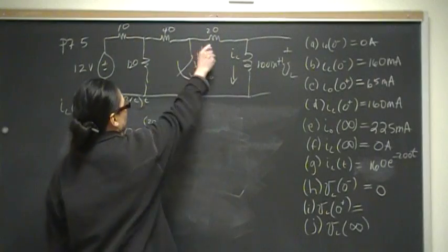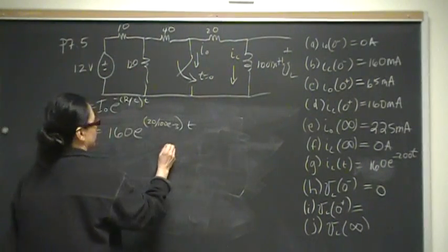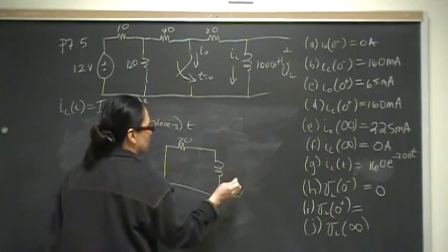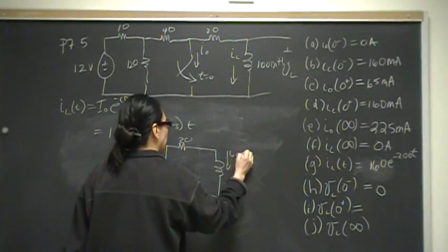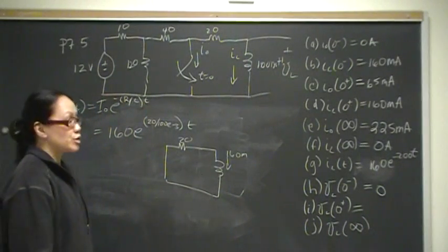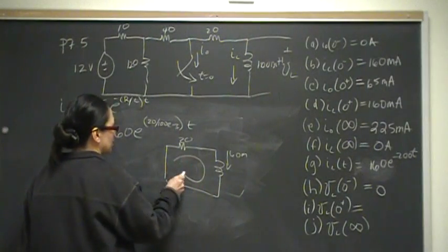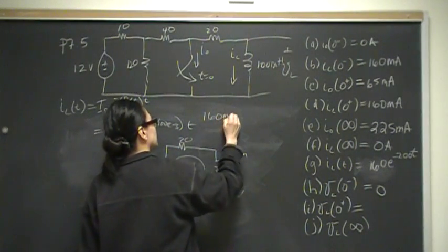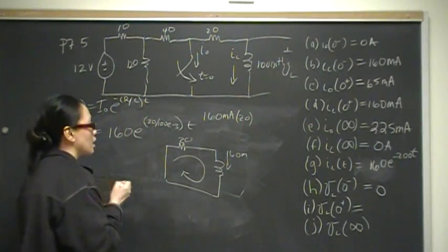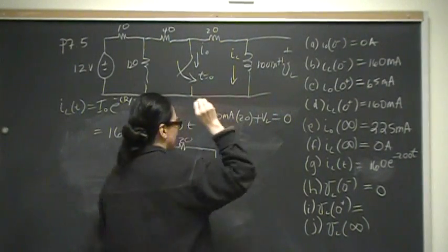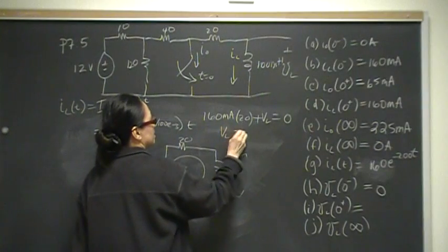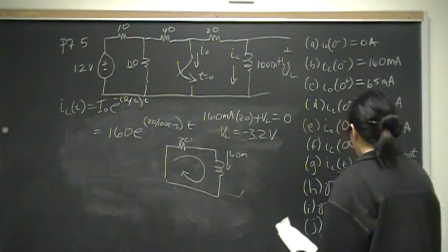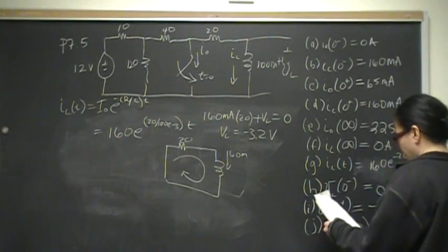When the switch closes, the inductor does have a voltage. Looking at the loop with the closed switch, 20-ohm resistor, and inductor carrying 160 milliamps: the voltage drop across the 20-ohm resistor is 160 milliamps times 20 ohms. Using KVL, that plus V_L must equal zero. Therefore V_L equals negative 3.2 volts at t=0+.